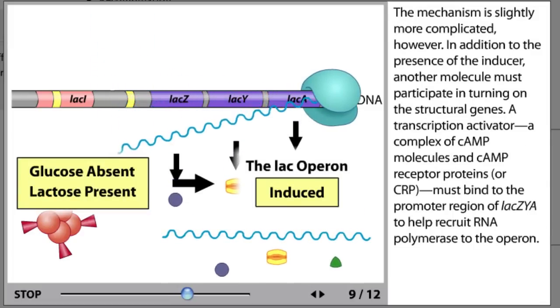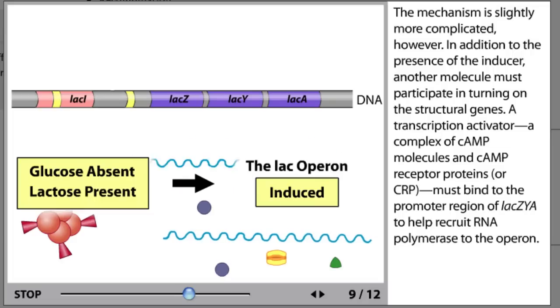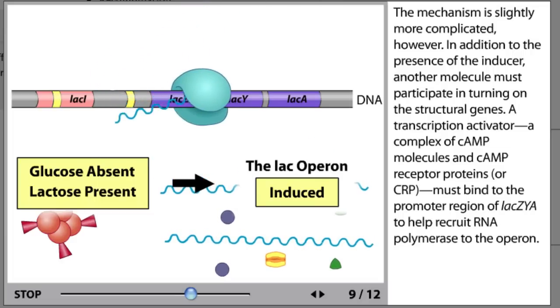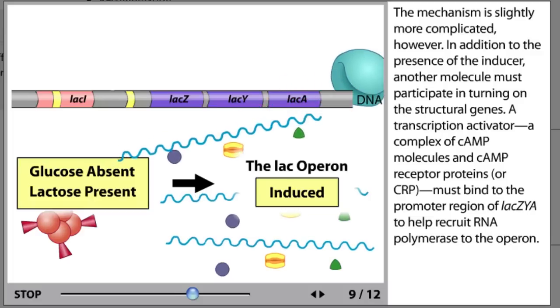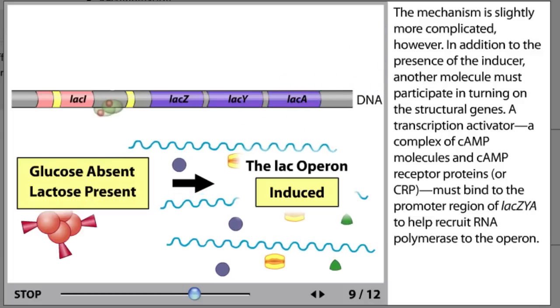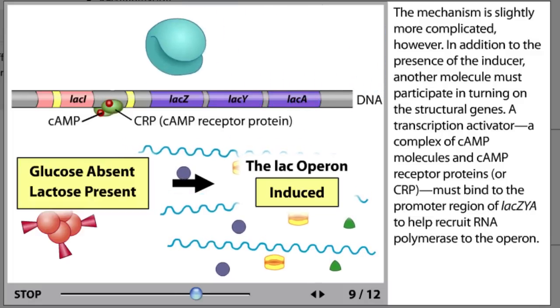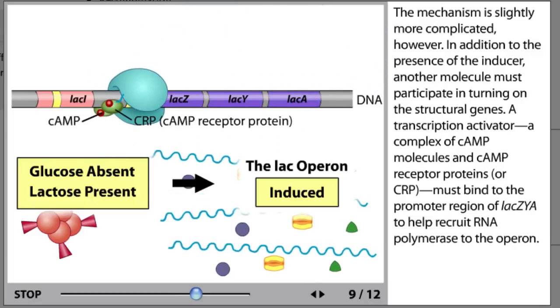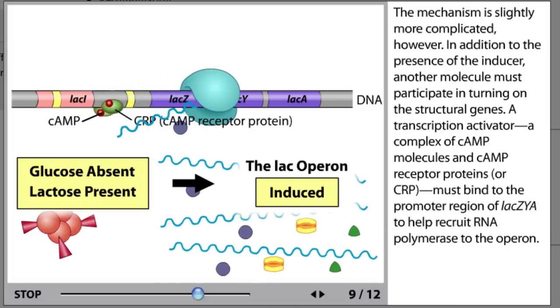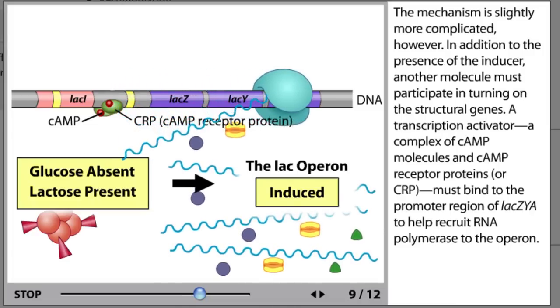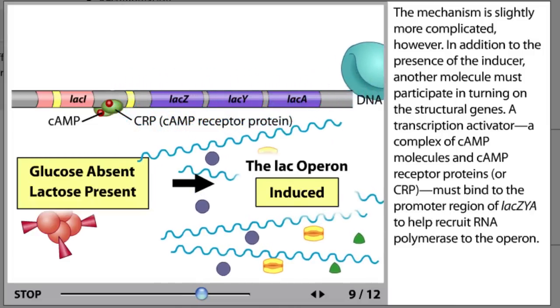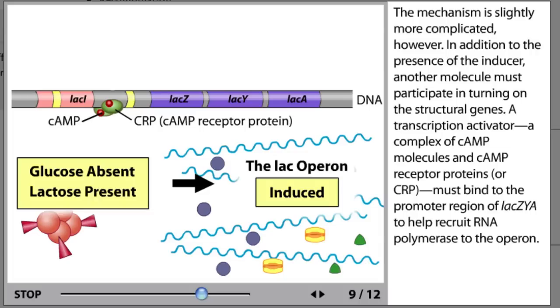The mechanism is slightly more complicated, however. In addition to the presence of the inducer, another molecule must participate in turning on the structural genes. A transcription activator, a complex of cyclic AMP molecules and cyclic AMP receptor proteins, or CRP, must bind to the promoter region of lacZYA to help recruit RNA polymerase to the operon.